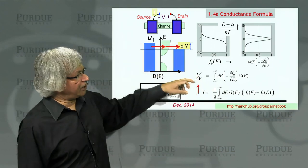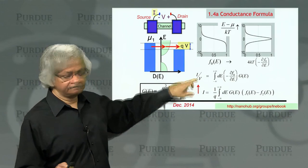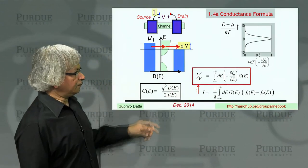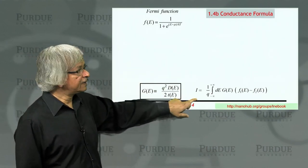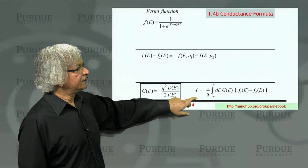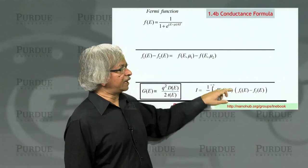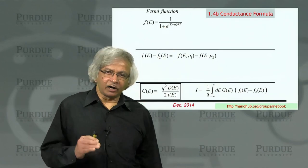Now, how do I get from this current expression to this conductance expression? So what we do is we start from this current expression here, and we have this F1 minus F2, and F is this Fermi function. So what's the difference between F1 and F2?